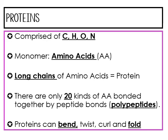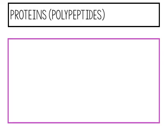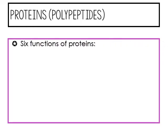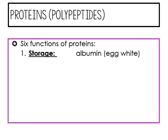Proteins can bend, twist, curl, and even fold in on themselves. So proteins, or polypeptides, let's talk about the six different functions. Function one is storage — albumin, which is egg white, is a protein.